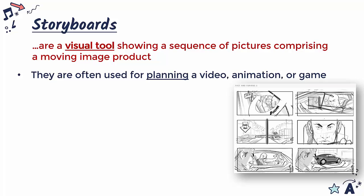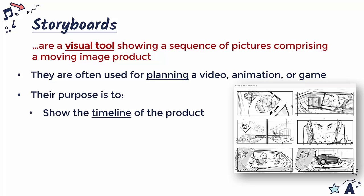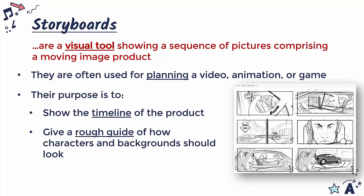A storyboard looks something like this — this is from Fast and Furious 5 apparently. It's a planning document, just sketching out how we are expecting this moving image product to be. Each box represents one frame or picture, roughly showing the order of what's going to happen. The purpose is to show the timeline of the product, and because we're at a fairly early stage it gives a rough guide of how characters should look, maybe their costumes, and the background of each scene.